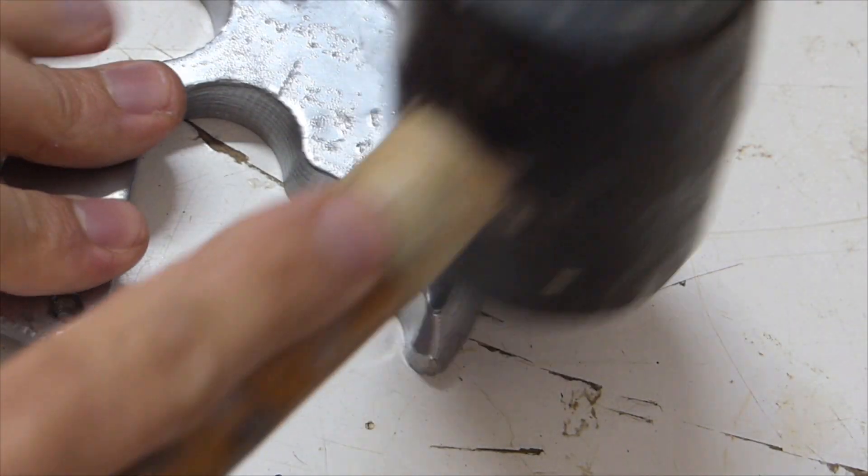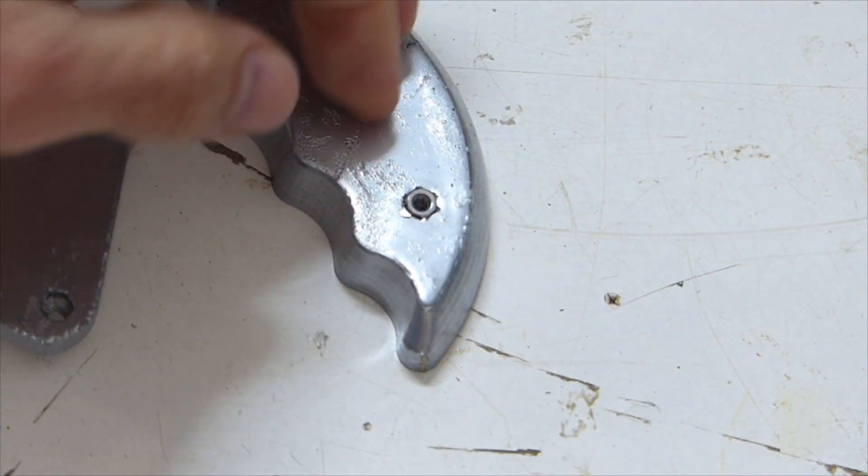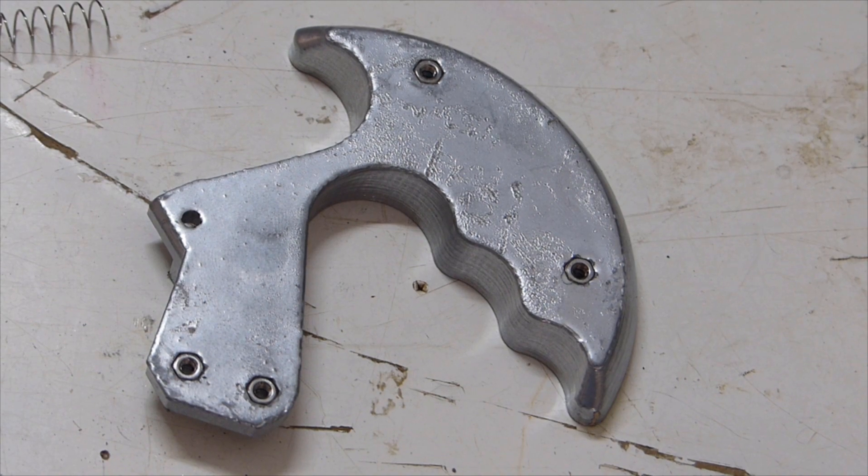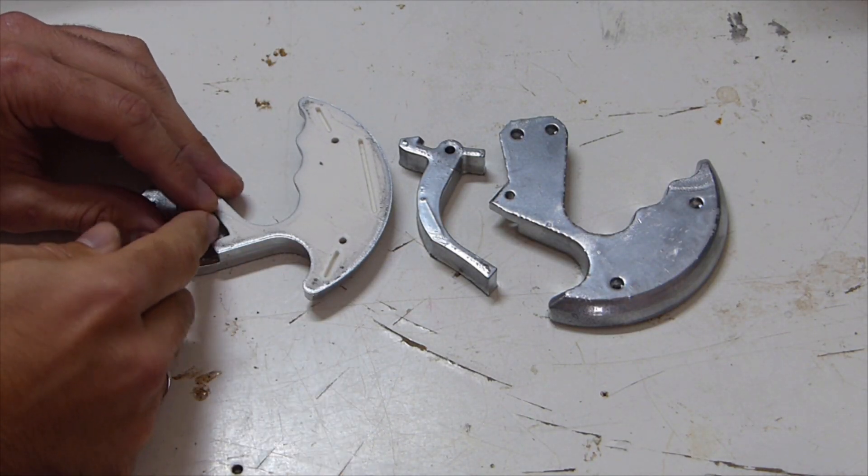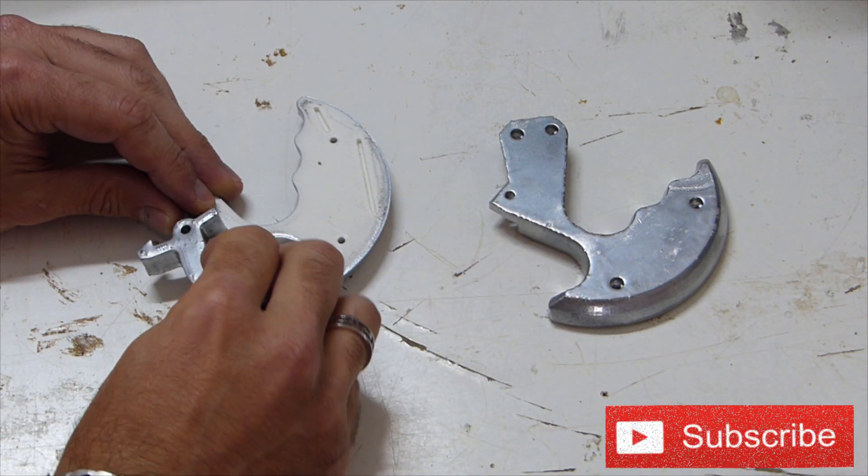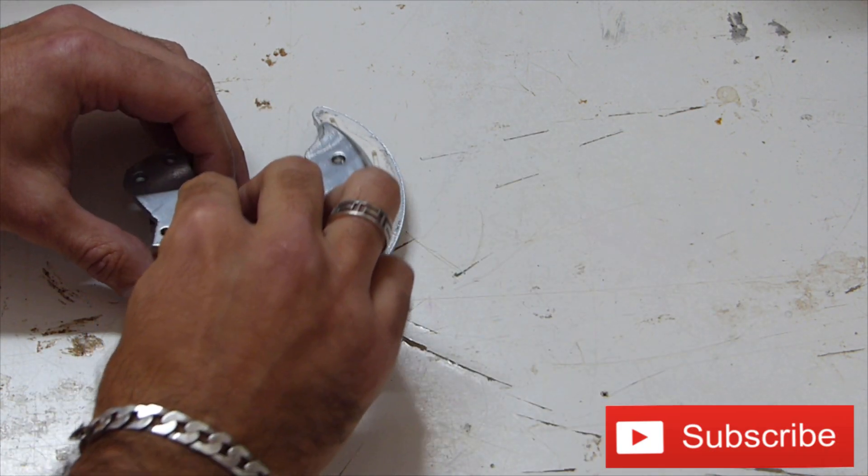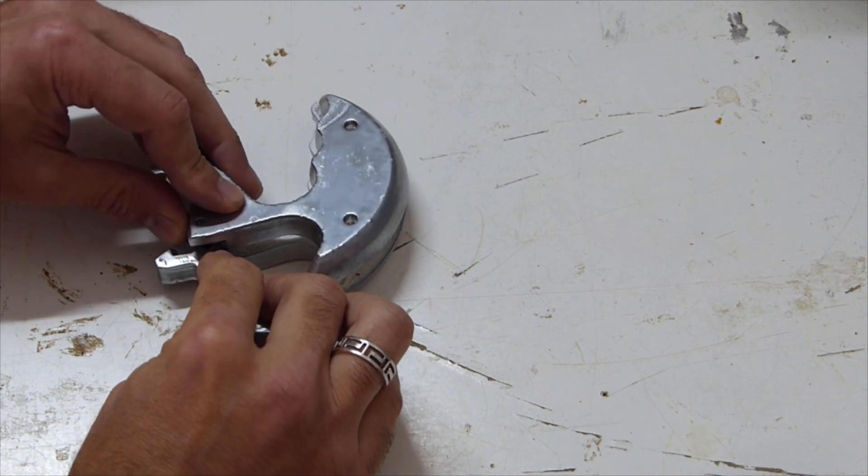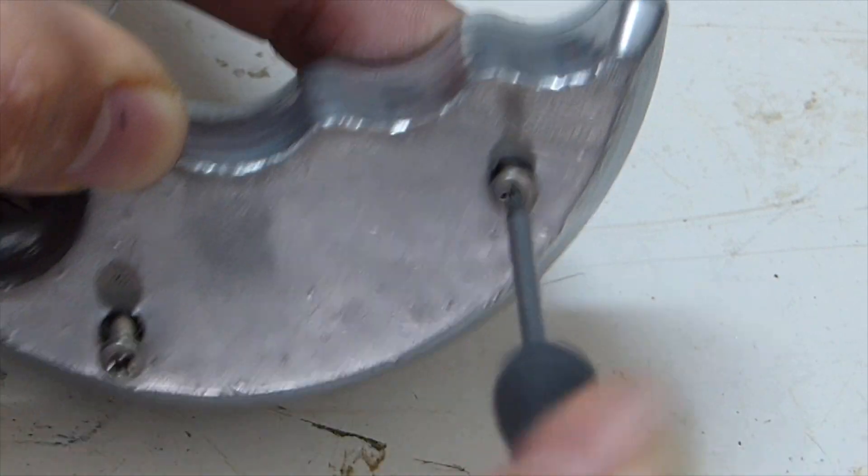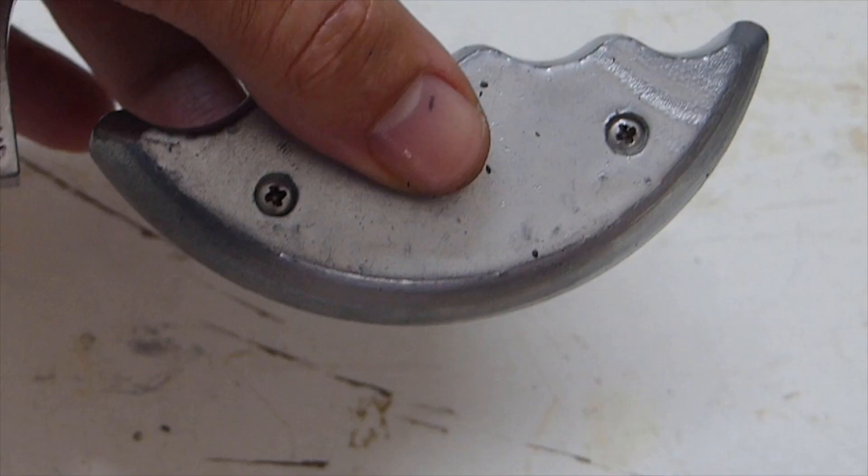Now it's time to assemble the handle grip. M3 nuts are gently hammered into their holes with a rubber mallet. A 2cm long spring is inserted into its slot as shown and the trigger is placed underneath. The other half of the grip is then placed on top to hold everything down in place.